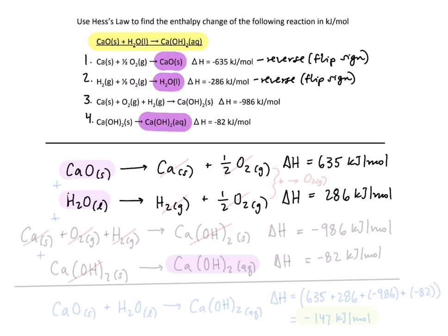Our third reaction we also know is in the correct order because we know we want to cancel out the solid calcium hydroxide so we'll go ahead and write in calcium plus oxygen gas plus hydrogen gas yields solid calcium hydroxide and we'll leave this enthalpy change as is at negative 986 kilojoules per mole.